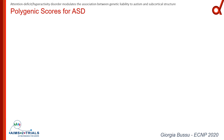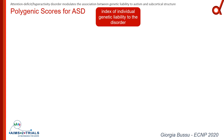Polygenic scores are increasingly being used as an index of individual genetic liability to autism or ASD. They measure the cumulative genetic load for ASD at an individual level, allowing the investigation of the genetic link between liability to ASD and a particular phenotype, which in our case is cortical brain volumes.